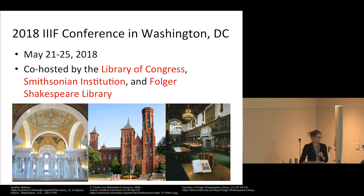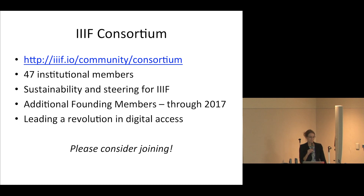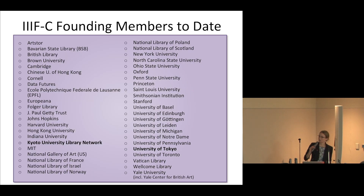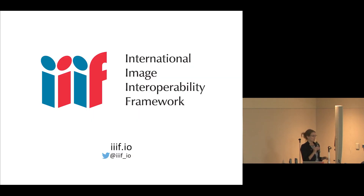Finally, we have a consortium of 47 institutions across the globe that make up the IIIF Consortium, providing sustainability and steering for this initiative. We are looking for more institutional members to join — we have a prominent list of cultural heritage institutions globally, including Kyoto University Library Network and the University of Tokyo. We would love to have even more institutions join the consortium. That concludes our keynote — thank you very much, and I look forward to the next presentations.